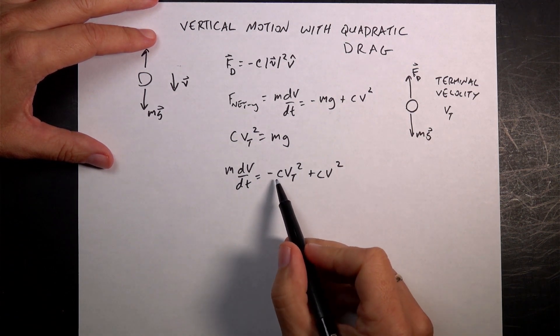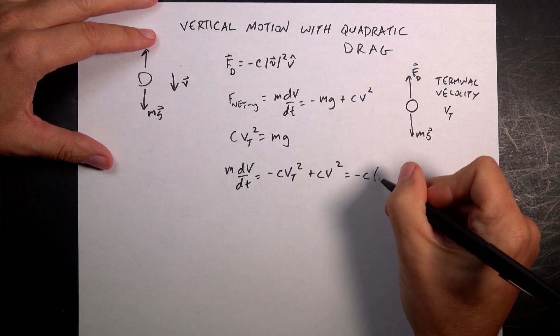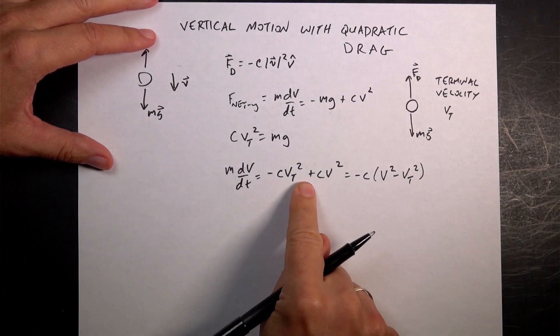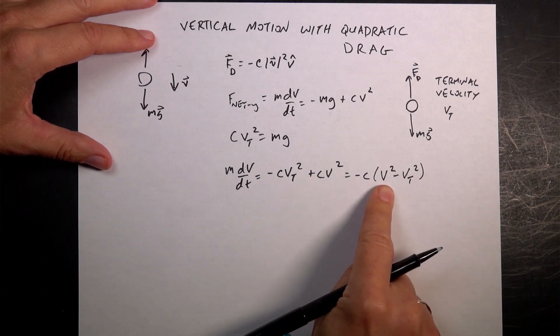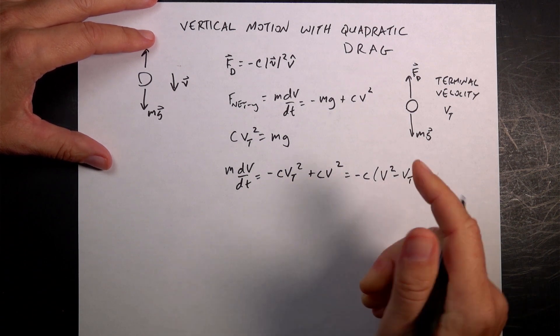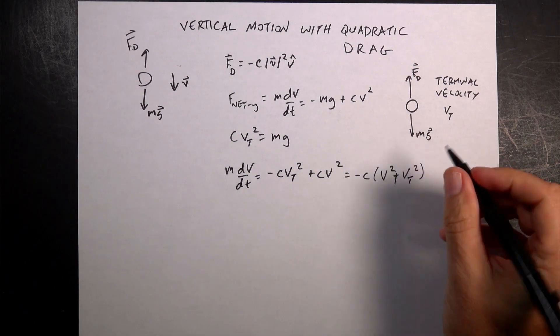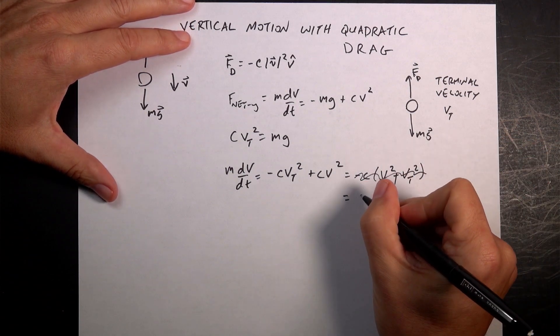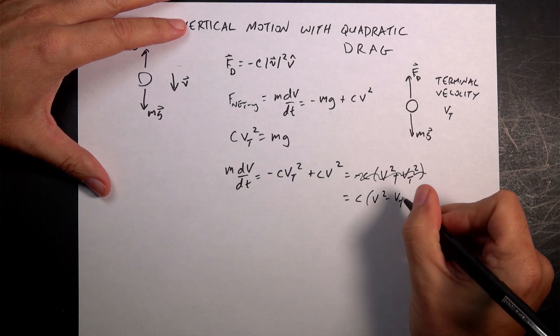and I get M dV dt equals negative C vt squared plus Cv squared. So I can factor out a negative C, and this becomes negative C v squared minus vt squared. Right? Because if I bring the negative sign out, that one becomes...no, that's positive. Wait.